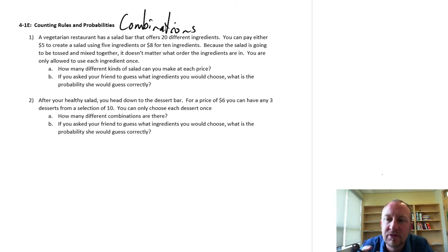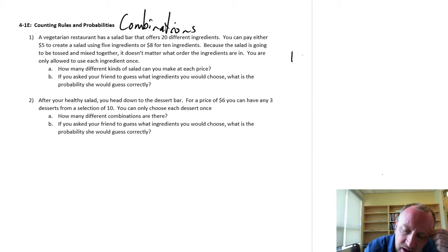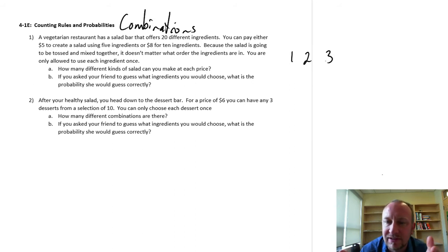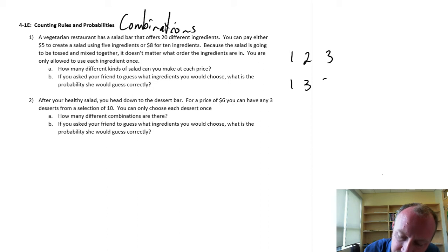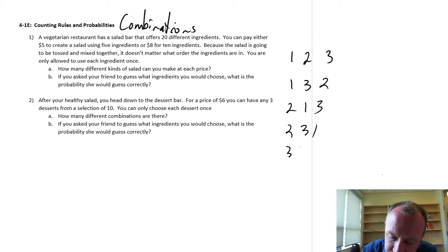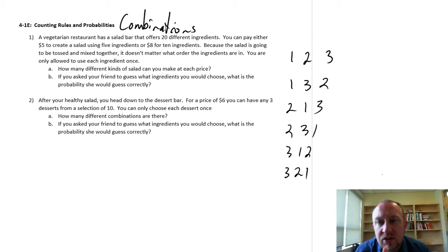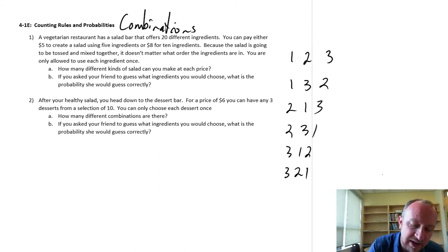Let me give you a simple example to illustrate this. If I have the values 1, 2, and 3, how many different permutations exist if we were to choose three values out of these three? So here's 1, 2, and 3 is one permutation; 1, 3, and 2 is another; 2, 1, 3; 2, 3, 1; 3, 1, 2; and 3, 2, 1. So here I have six different permutations of those three values.